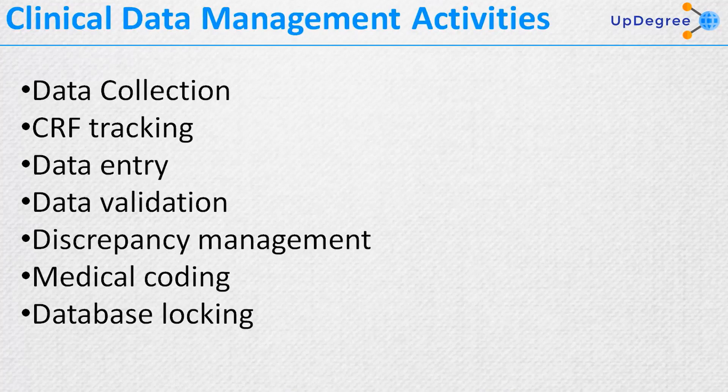Data entry takes place according to the guidelines prepared along with the data management plan, and is applicable only for paper CRFs retrieved from sites. Usually double data entry is performed, where data is entered by two operators separately. The second pass helps in verification and reconciliation by identifying transcription errors and discrepancies caused by illegible data, resulting in a cleaner database.